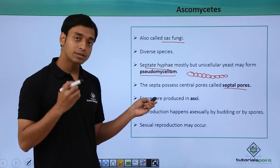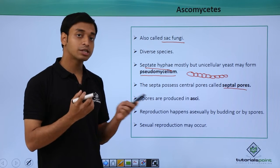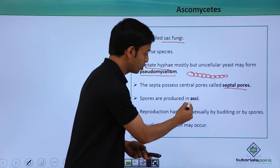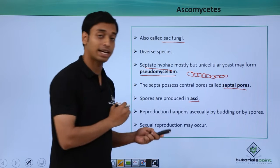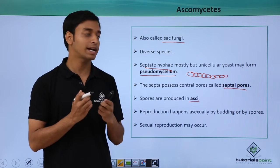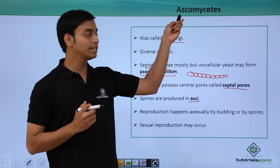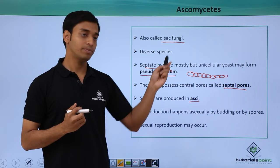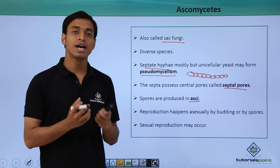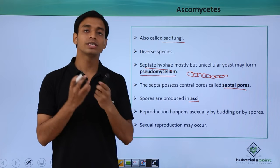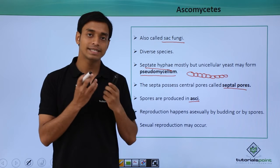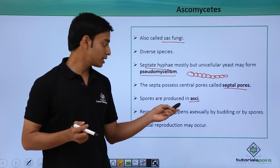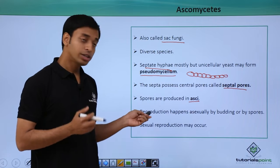The spores are produced in special sac-like structures known as asci. This is the reason why ascomycetes are also known as sac fungi — because their spores are produced in these special sac-like structures called asci.